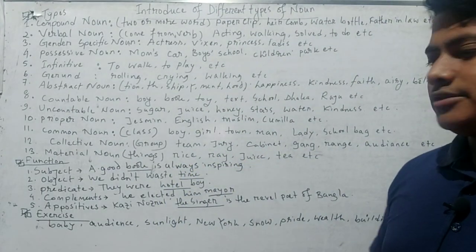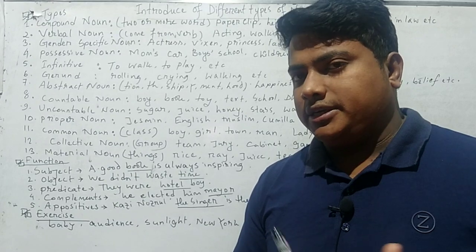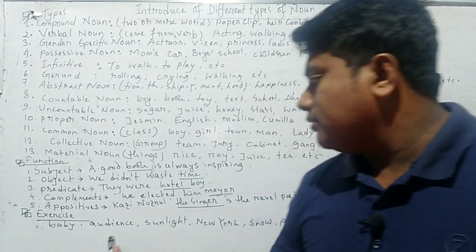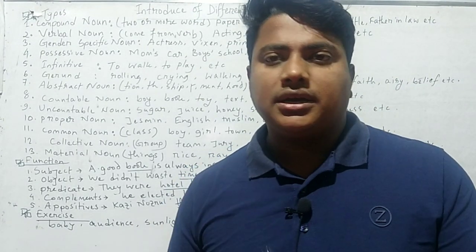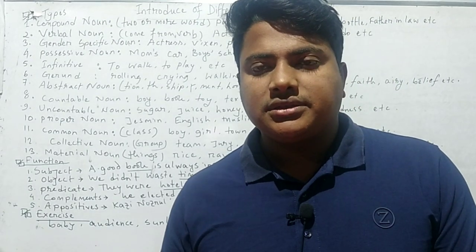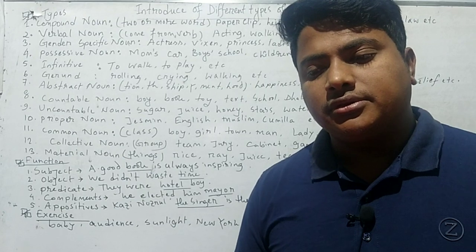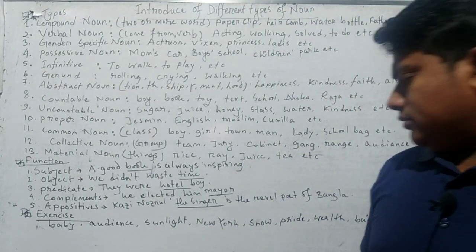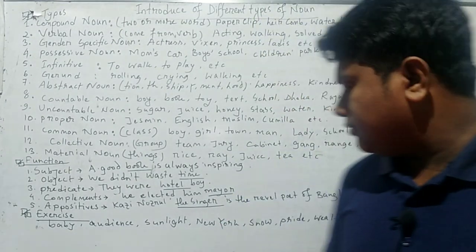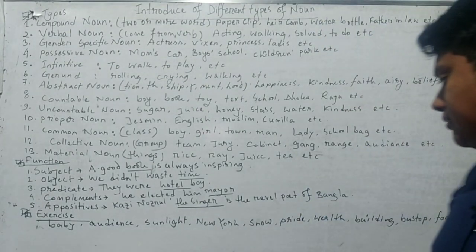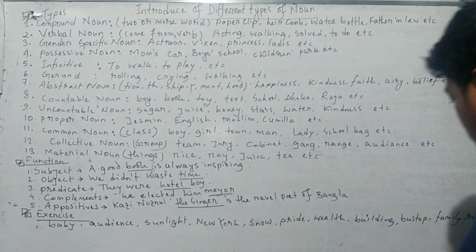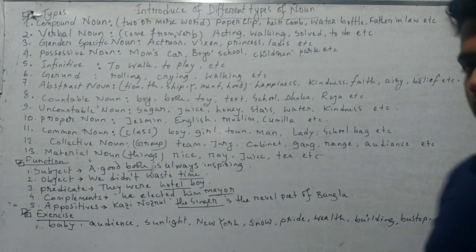Here are the answers: 'Baby' — males and females are included, so baby is a collective noun. 'Audience' — boys and girls are present, so audience is a collective noun. 'Sunlight' is a compound noun. 'New York' is a proper noun. 'Snow' is a material noun. 'Fright' is an abstract noun. 'Wealth' is an abstract noun. 'Building' is a gerund or participle. 'Family' is a collective noun. 'Ruling' is a participle.